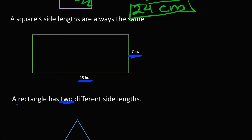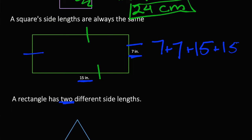So how do we figure this out? We know that they only gave us two side lengths, and there are only two different ones — the sides directly across from each other are going to be the same. Since there are going to be two sides of 7 inches, we can do 7 plus 7. Then since there are going to be two sides of 15, we can do 15 plus 15 to find our perimeter. 7 plus 7 is 14, and 15 plus 15 is 30, and 14 plus 30 is 44. So our perimeter would be 44 inches.